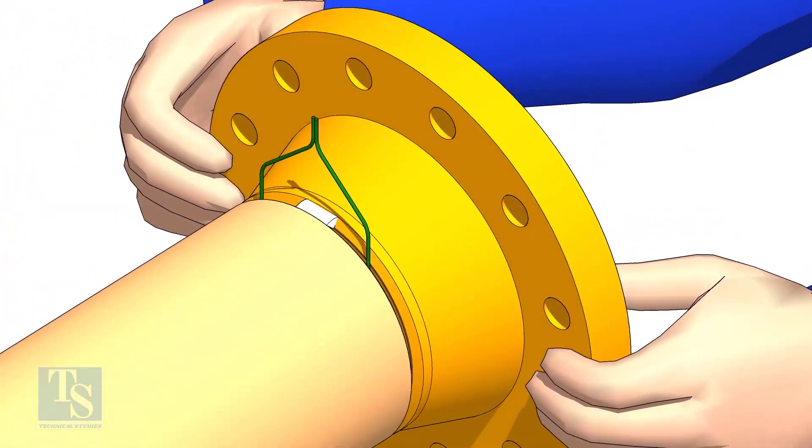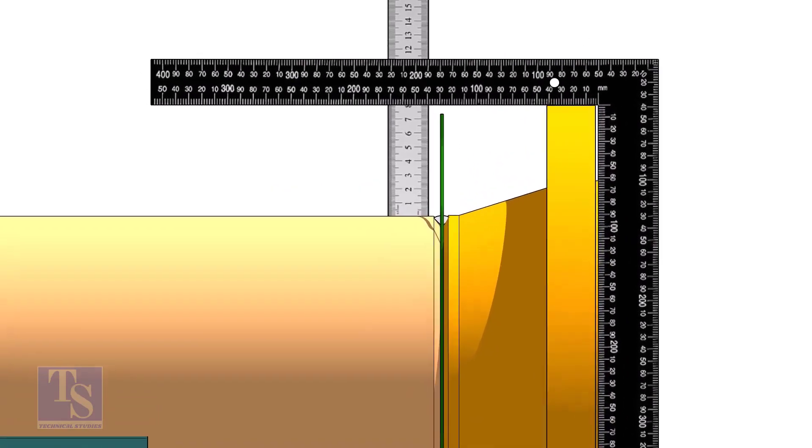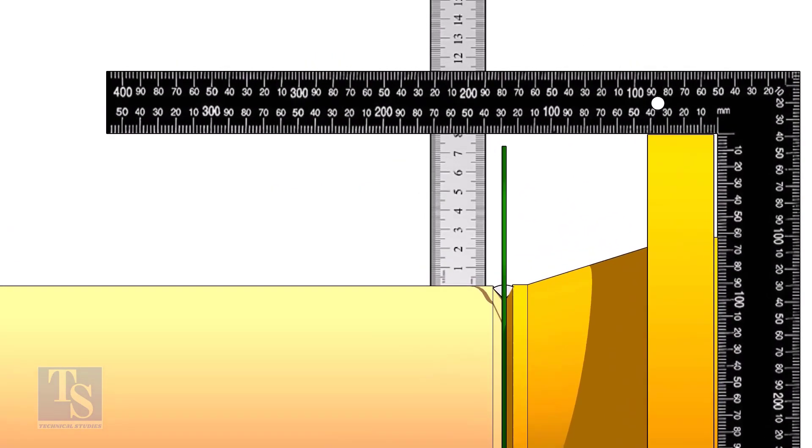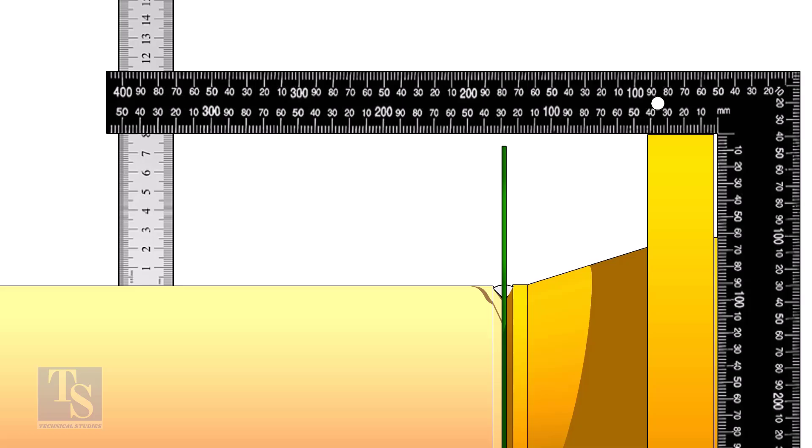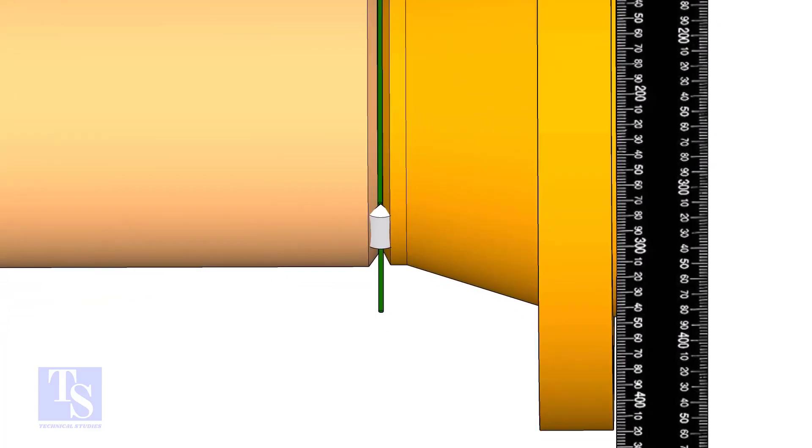Hold the flange with a gap rod in the joint. Tack weld on top side of the joint. Check the squareness of flange face to the pipe as shown. Tack weld at the bottom side of the joint.